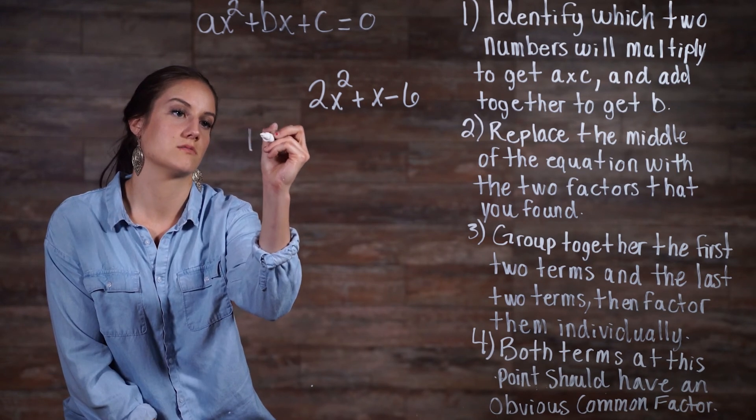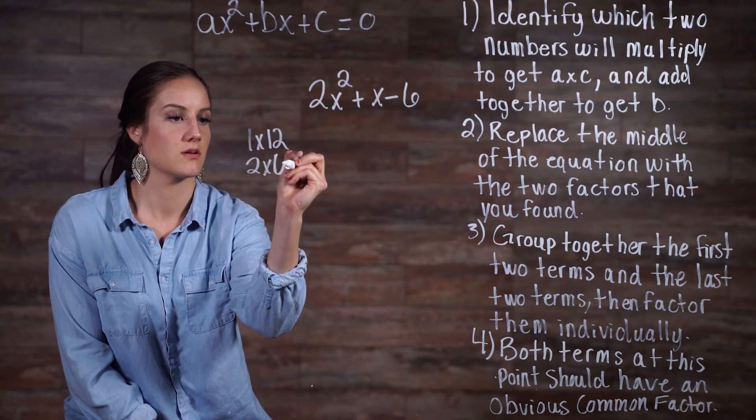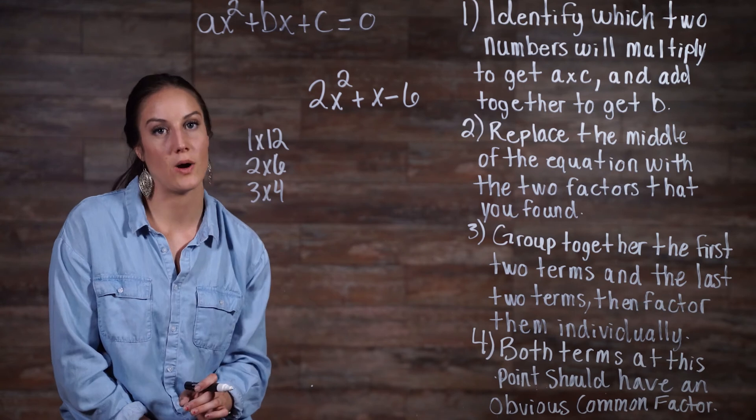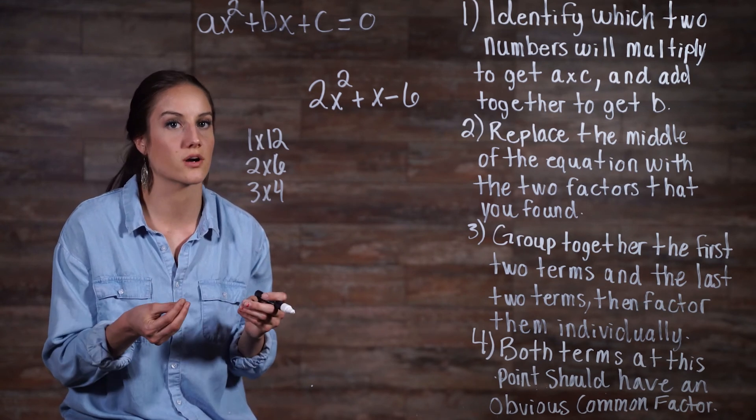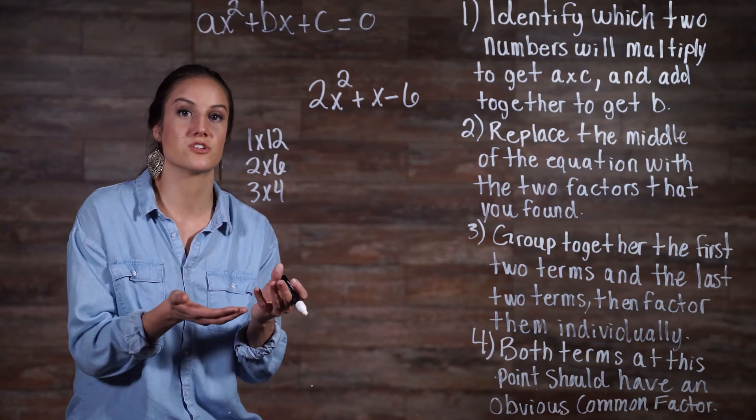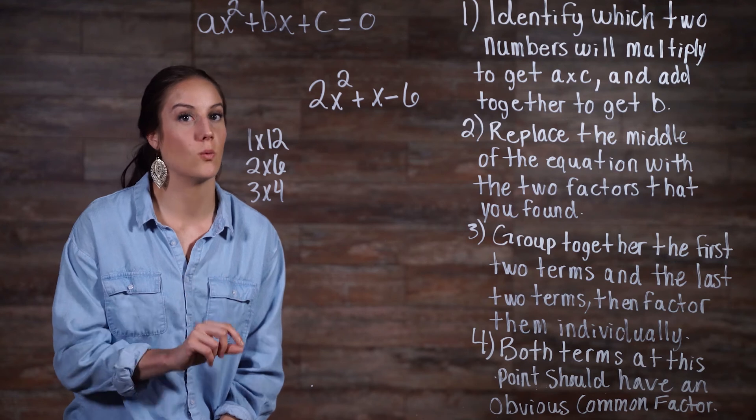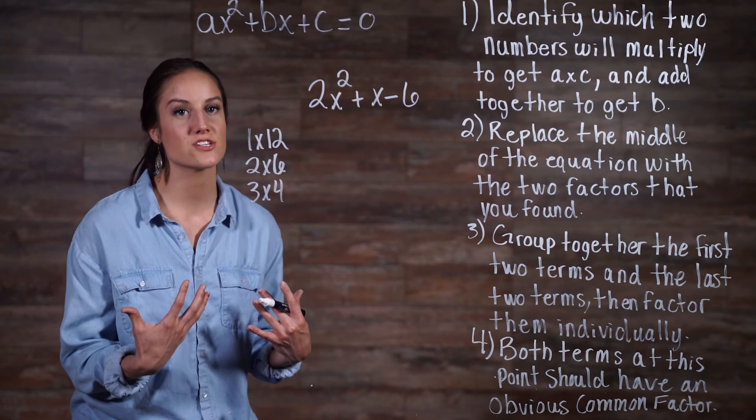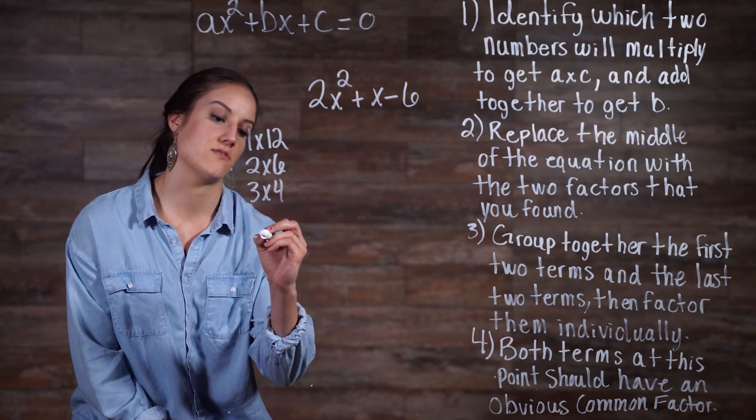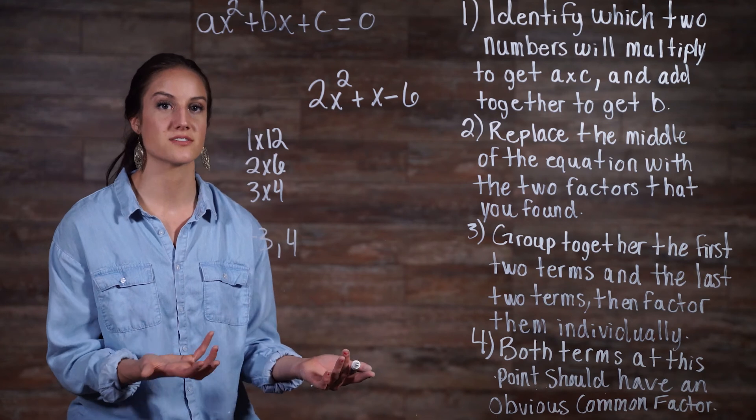So obviously there's 1 times 12, and there's 2 times 6, and there's 3 times 4. Remember, we're actually dealing with a negative 12, so we need to consider that when choosing which two factors work. Okay, so we need these two factors to multiply together to get negative 12, and each of them will if we just throw a negative sign in the front. But we also need for it to add to get a positive 1. So the only way that can happen is if we take the two factors 3 and 4 and throw a negative sign in front of our 3. That makes our factors negative 3 and 4, which multiplies to give us a negative 12 and adds to give us a positive 1.